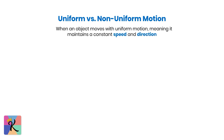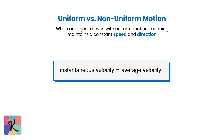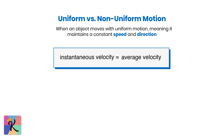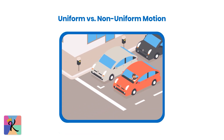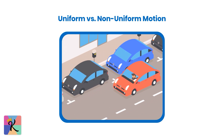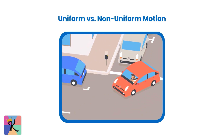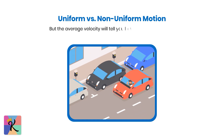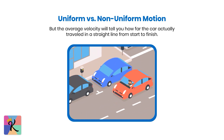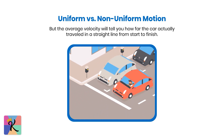When an object moves with uniform motion, meaning it maintains a constant speed and direction, its instantaneous velocity is equal to its average velocity. But most real-world motion is non-uniform, with constant changes in speed or direction. In stop-and-go traffic, for example, the car's instantaneous velocity is constantly changing as it brakes, accelerates, and turns, but the average velocity will tell you how far the car actually traveled in a straight line from start to finish.